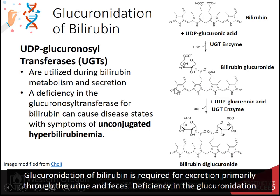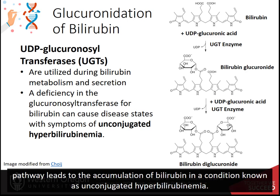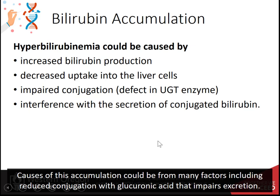Glucuronidation of bilirubin is required for excretion primarily through the urine and feces. Deficiency in the glucuronidation pathway leads to the accumulation of bilirubin in a condition known as unconjugated hyperbilirubinemia. Causes of this accumulation could be from many factors, including reduced conjugation with glucuronic acid that impairs excretion.